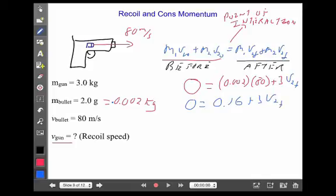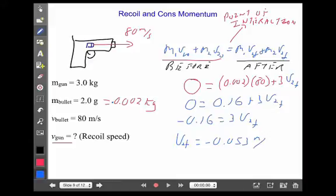I subtract and divide by 3, and I get a recoil speed of the gun of negative 0.053 meters per second.